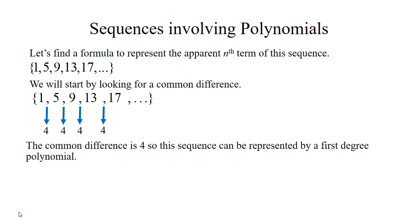If you have a common difference between your terms you usually have an arithmetic sequence, so we can use a first-degree polynomial or linear equation to represent the sequence. Remember that your input values are the natural numbers, so your input for the first term is 1 and your output is 1. For the second term your input is 2 and your output is 5, and so on.